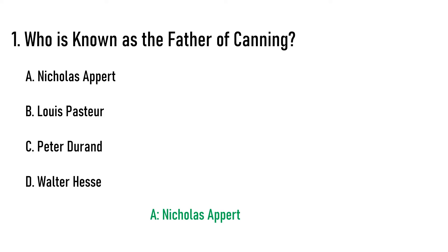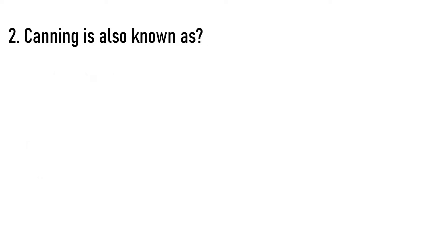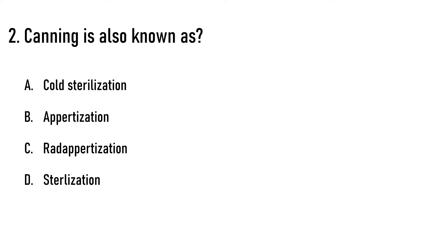Next question: Canning is also known as dash. Options are: A) cold sterilization, B) appertization, C) rad appertization, D) sterilization. The correct answer is appertization. This name is after Nicholas Appert, who is known as the father of canning. Let me know in the comment box what is also known as cold sterilization.